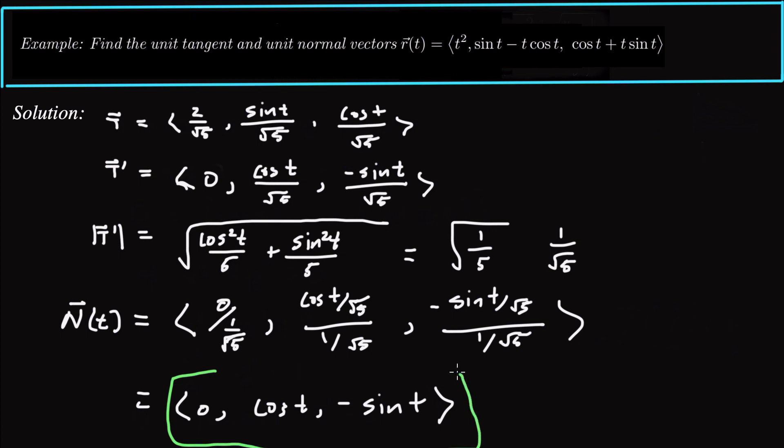You can verify that these are unit vectors by taking their magnitude — you should get 1, and that is indeed the case. Thank you.